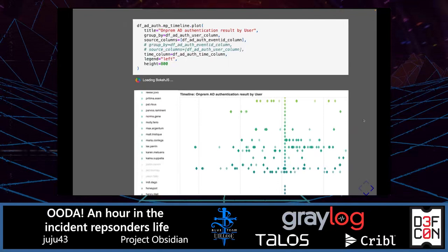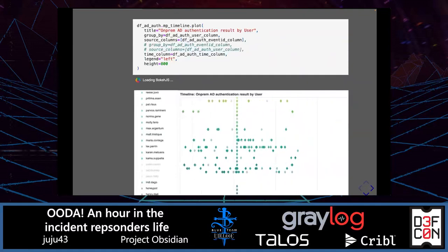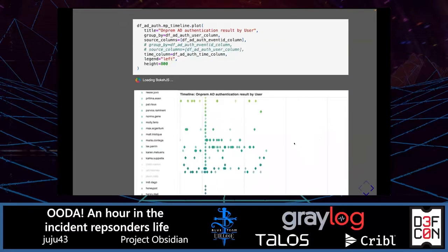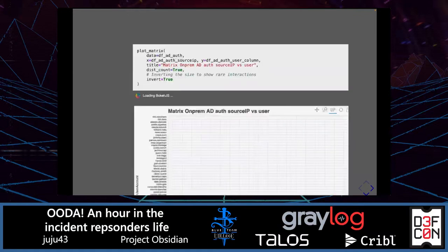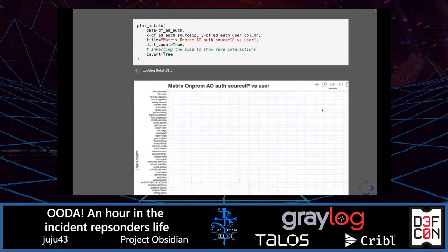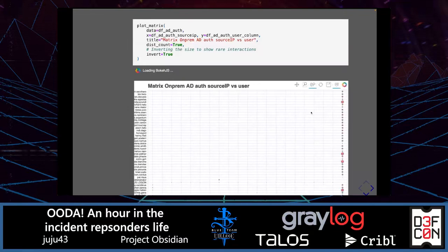We can see this line which is nearly always associated with the password spray. Let's see a snapshot of the rendering where we have more of the users — and we can see that basically all users of the company have an attempt to log in. The chart doesn't show if it's failed or successful. But if we review another visualization of user versus IP, we can see that all those logins are coming from a single IP address.